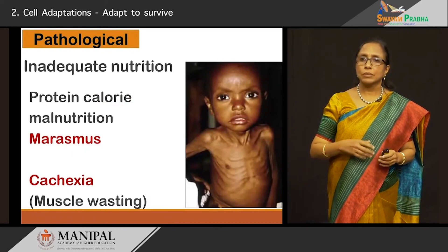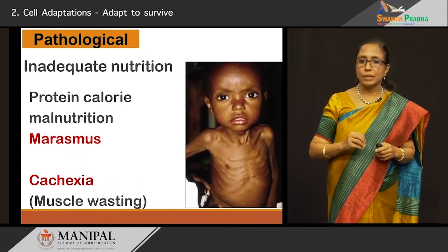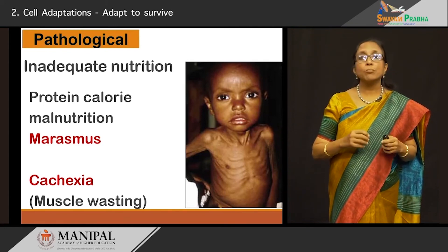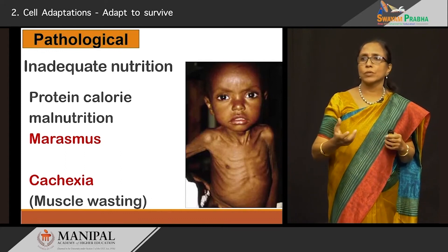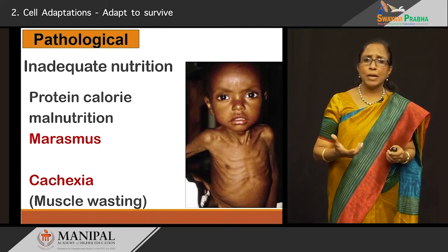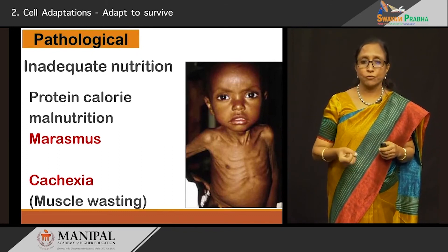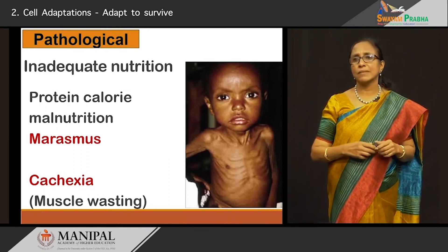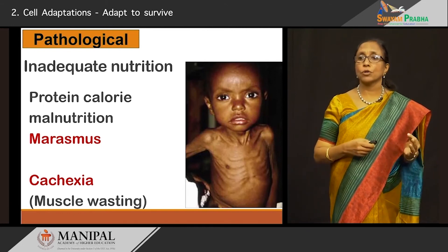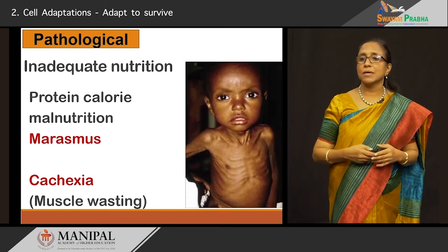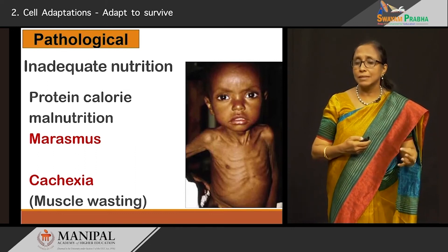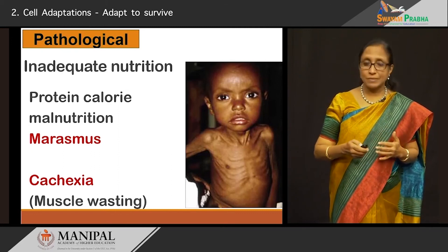The next situation is inadequate nutrition. When nutrition is inadequate — like in protein-calorie malnutrition — we see the child with marasmus: we can see the bones, but the skeletal muscles are all atrophied and thinned out — what we colloquially call a skin-and-bone appearance. Because of malnutrition and inadequate nutrition the muscles have all undergone atrophy. A similar situation is extensive muscle wasting called cachexia, seen in late-stage neoplasms or chronic debilitating diseases — caused by certain cytokines like tumor necrosis factor — resulting in generalized muscle wasting.